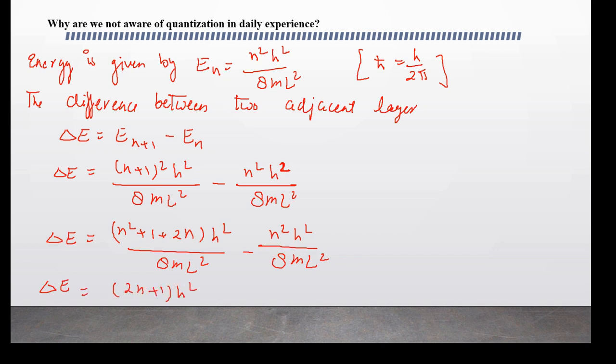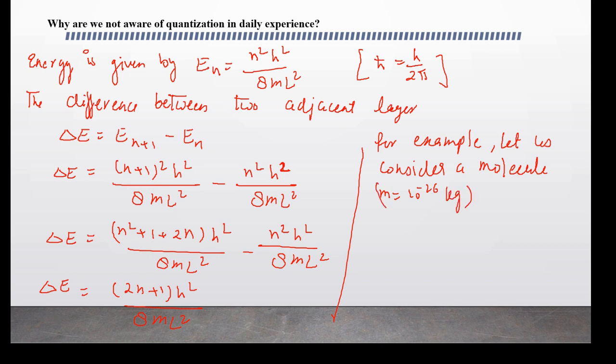Now what we'll do is consider one molecule in a box that is 10 cm, which is 0.1 meter. Let us consider a molecule of mass m equal to 10 to the power minus 26 kg in a box of length 10 cm equals 0.1 meter, and calculate delta E.